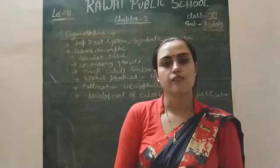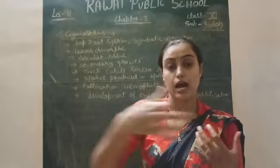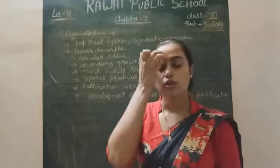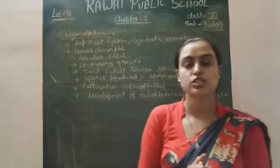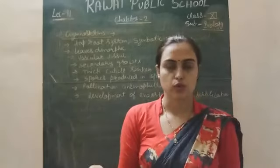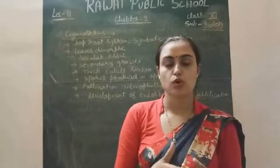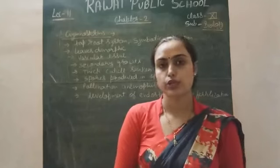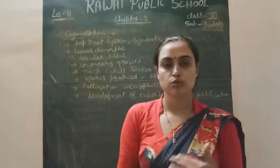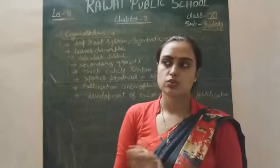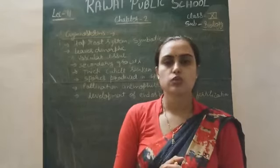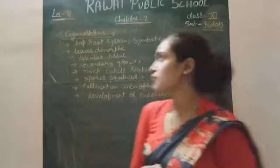The mycorrhiza has large hyphae which absorb nutrients from the soil, because the Cycas roots are very small in size and a taproot system is present. So absorption takes place by the hyphae of the mycorrhiza. With the help of this absorption, the Cycas leaves produce food by photosynthesis, and this food is also given to the mycorrhiza fungus. This association, where both organisms benefit from each other, is called symbiotic association.